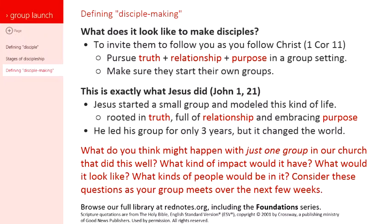That's what we have to think about for our church. What do you think might happen with just one group in our church that did this well? What kind of impact would it have? Let's consider these questions as your group meets over the next few weeks. Now that we're done with this group launch series, you're going to meet over the next four weeks. Pick a study from Red Notes — make sure to do that so it's reproducible and we're all on the same page. Think about these questions as you meet. And then make sure you schedule that brainstorm date. Get all the people involved in these first two phases together and talk through what phase three looks like — how can we launch groups that are reproducible and making disciples in a small group setting?